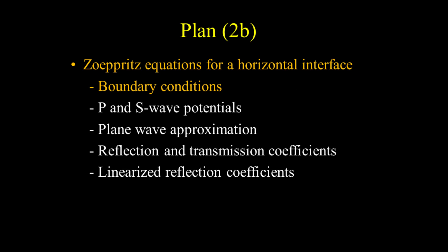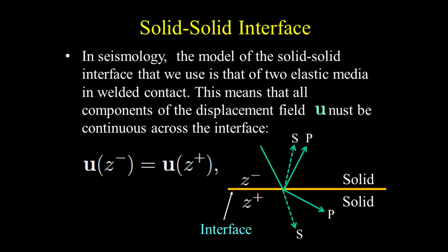We will start by defining the boundary conditions between two rock formations for the horizontal interface. At the solid-solid interface, the incident energy is partitioned into two reflections — that is, reflected P and S waves — and two transmissions, or transmitted P and S waves. So we need four boundary conditions to solve this energy partition problem.